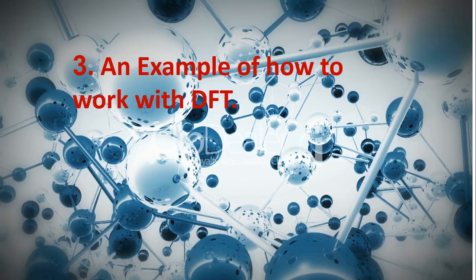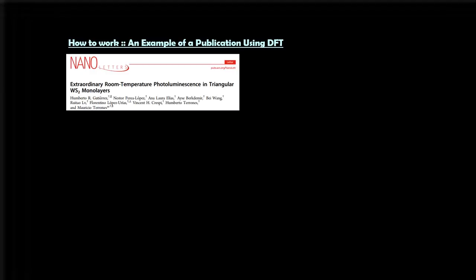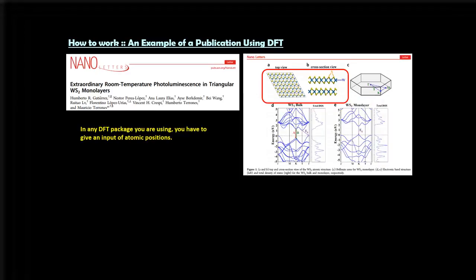So we will go to an example of how to really work with DFT. Now see, this is a paper published in Nano Letters. This is actually of WS2, which is a very well known material. So what do you have to do: in any DFT package you are using, you have to give an input of atomic position like this. Here, for this, they had calculated the band structure here. But for anything you are calculating, you have to give this.